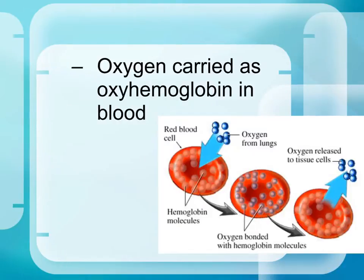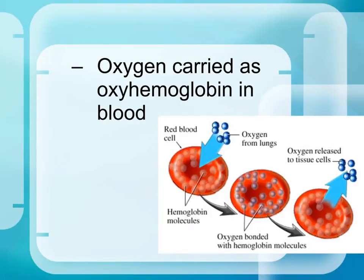The form of oxygen carried in the blood is bound to hemoglobin, which is the part of the red blood cells that carries oxygen — this is termed oxyhemoglobin. The hemoglobin of red blood cells acts like a magnet that holds onto oxygen and releases it into the tissue cells when it is needed.